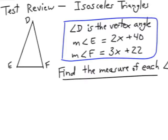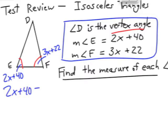The first idea is to make sure you mark up what they give you. It looks like measure of angle E is 2x plus 40, measure of angle F is 3x plus 22. Find the measure of each angle. What do you know about those angles? Vertex angle implies that we have an isosceles triangle, so those base angles have to be congruent. Let's write an equation, setting them equal to each other, and now we solve for x.